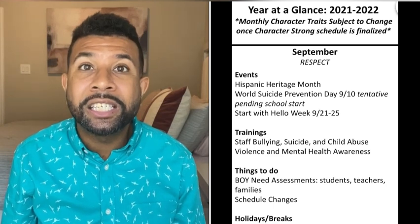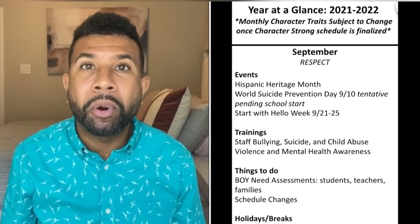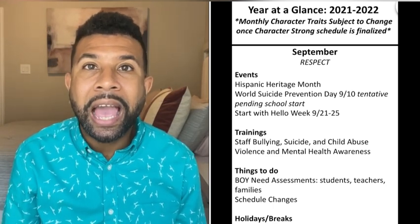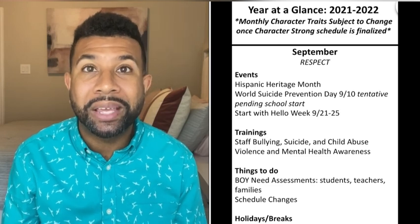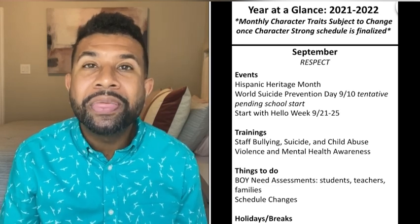Last but not least, this is the most important part of the year-at-a-glance: you pick out character traits that coincide with each month. This is how you build and create your lessons. Once you've picked out your character traits for each month, talk with your administrator first. Make sure they are aligned with your program and the specific needs you plan on addressing for the school. After you've got the green light, that's when you start creating lessons.